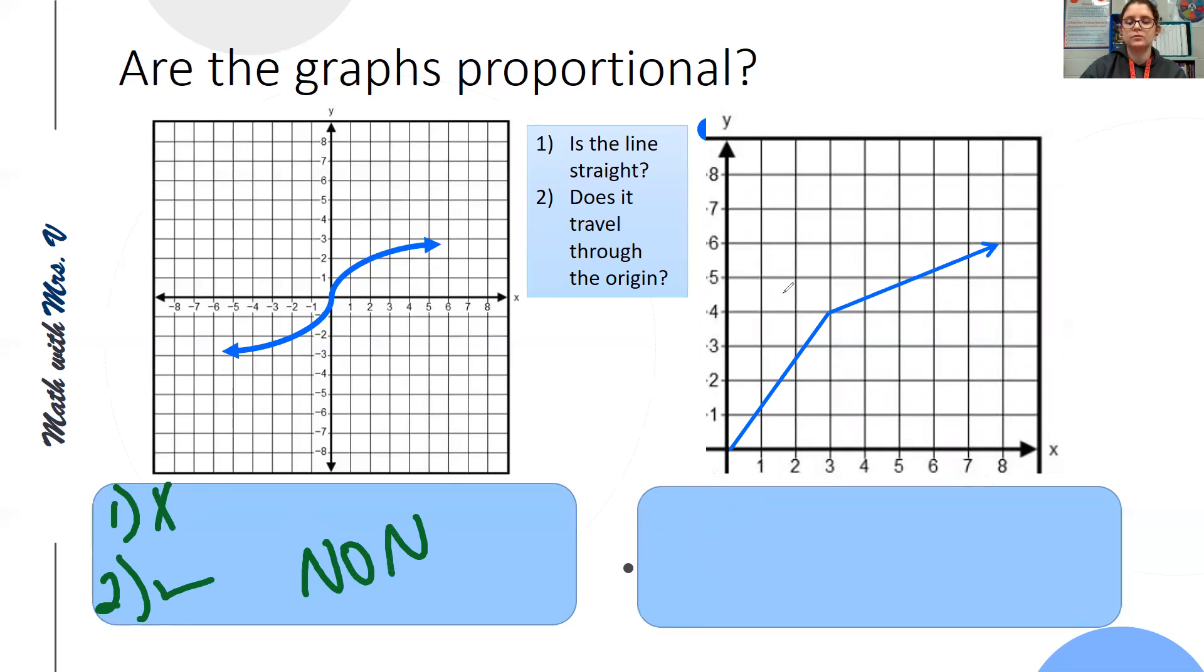Our last example of looking at graphs. Is this a straight line? And no, it's not. It's got a bend in it where it changed directions. Does it travel through the origin? Yes. We don't have our full graph here, but we can see that it does go to the origin. But because we did get one no answer, this is also non-proportional.